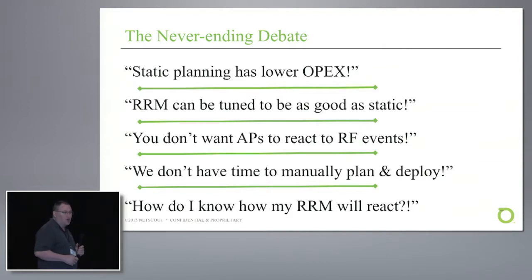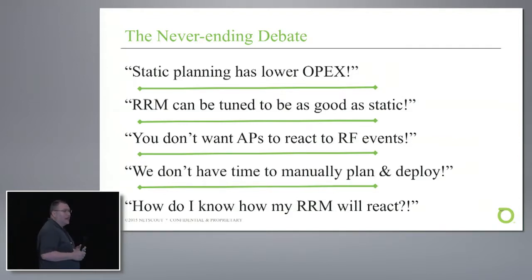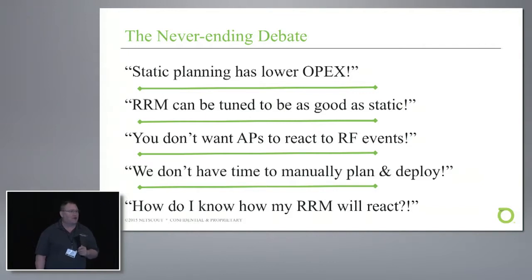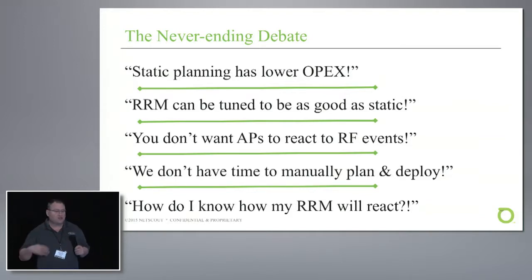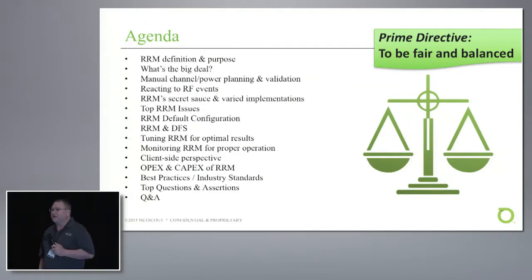Static planning has a lower OPEX — that's a reasonable assertion. RRM can be tuned to be as good as static — I believe that can be true in some cases. Some say you don't want APs reacting to RF events, some say you do. Others say we don't have time to manually plan, just turn on automatic. My prime directive here is trying to be fair. I have an opinion — I'm not neutral — but I want to be fair to those with a different perspective.